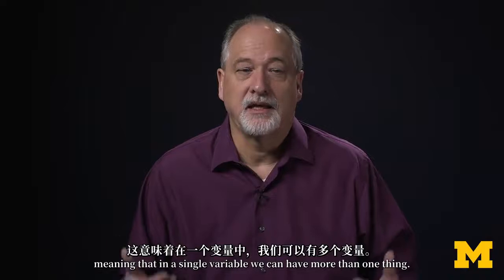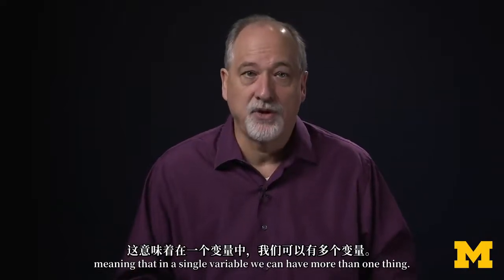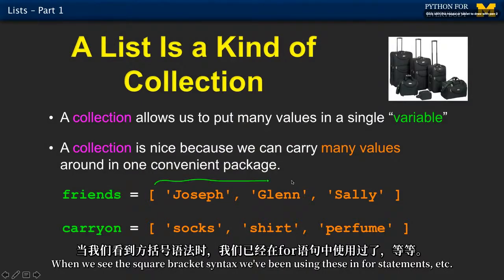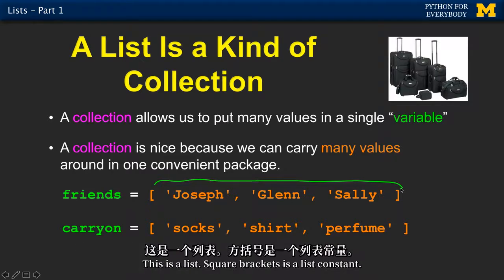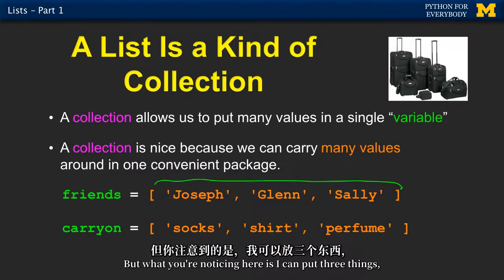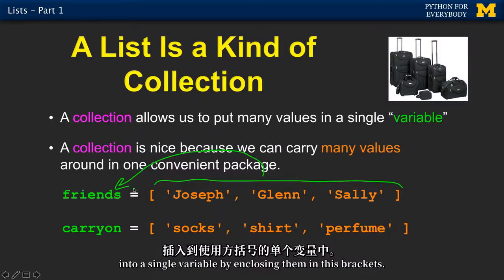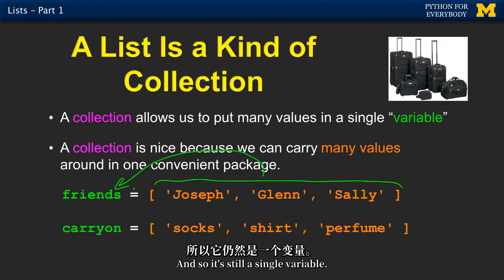A list is a collection — in a single variable we can have more than one thing. We've actually been using lists all along. When we see the square bracket syntax in for statements, this is a list. Square brackets is a list constant. We can put three different strings — Joseph, Glenn, and Sally — into a single variable by enclosing them in brackets. It's still a single variable.